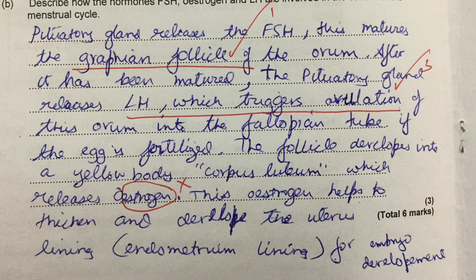That gets the mark for ovulation into the fallopian tube. Then: if the egg is fertilized, the follicle develops into a yellow body called the corpus luteum. This is true, however the student then says the corpus luteum releases oestrogen — and it doesn't. In actual fact, the corpus luteum releases progesterone. All of this is beyond the specification and you're in the danger zone of not gaining any marks.